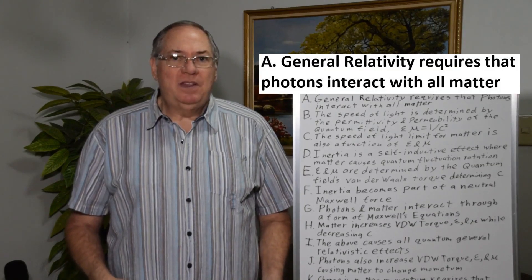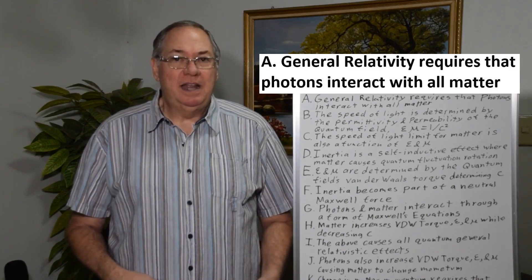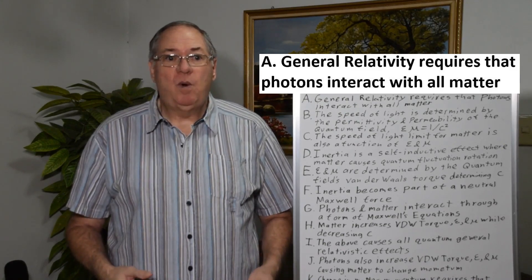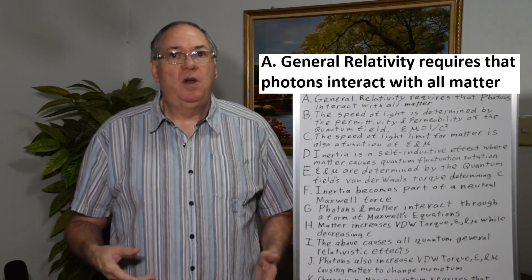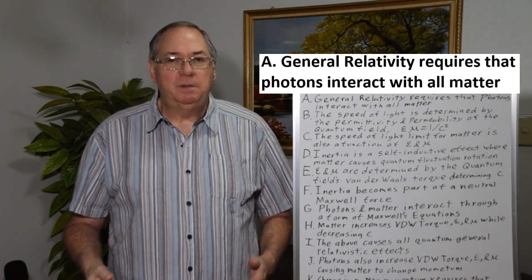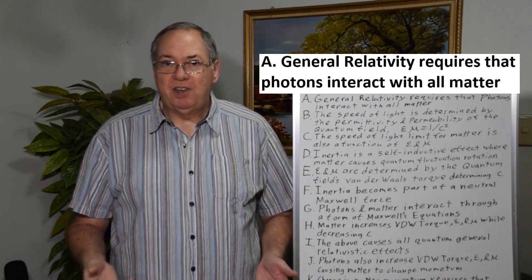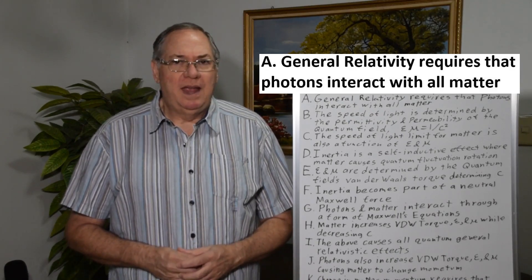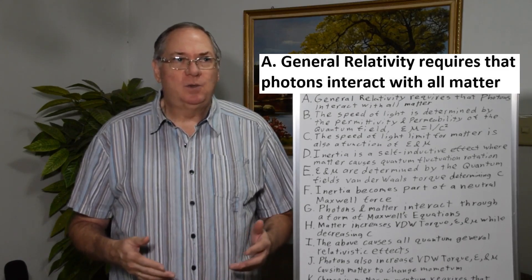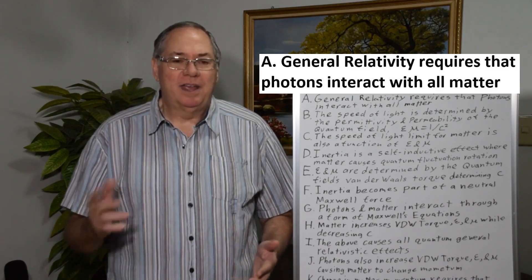And to begin with, general relativity in its current form requires that every photon interacts with all matter, which makes changes in the trajectory of the photon. And that's important, and it's sort of a Machian effect, and I'll get back to that later.